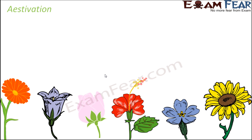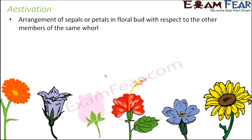So what is estivation? Here we will talk about how these different parts like the petals and the sepals, how they are organized or how they are arranged in a flower with respect to each other. We have spoken about the four whorls of a flower: Calyx, Corolla, Androecium and Gynoecium. So now we will see how they are arranged with respect to each other. Estivation is basically the arrangement of sepals or petals in a floral bud with respect to the other members of the same whorl.